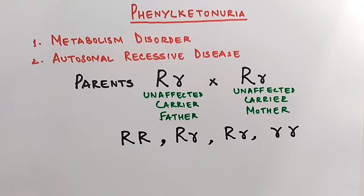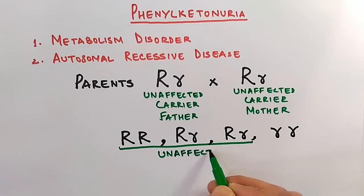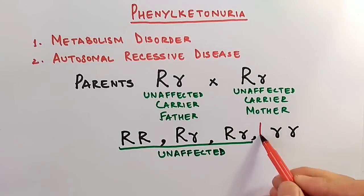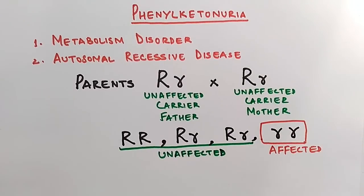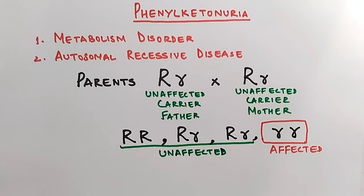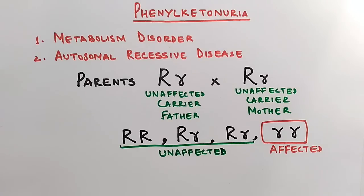When we get a cross of two unaffected carriers — a carrier father and a carrier mother — we get a generation with a ratio of three to one. Three persons will never show any symptoms because they have the dominant allele, but the last one, with both alleles in a recessive state (small r, small r), is the diseased person. The first (capital R, capital R) will not produce symptoms or act as a carrier, while the two in hybrid state (capital R, small r) will act as carriers like their parents.